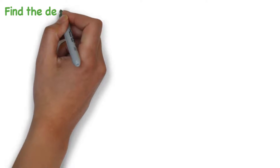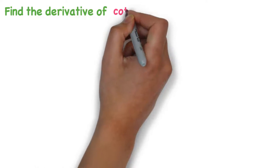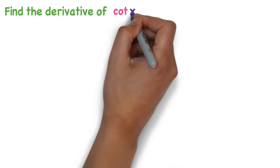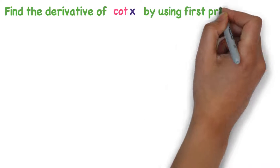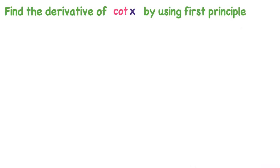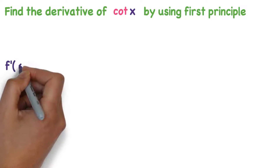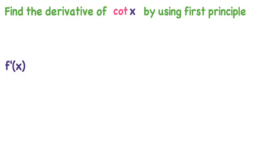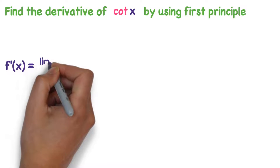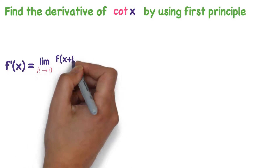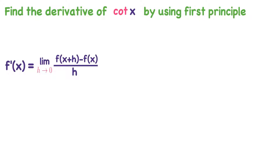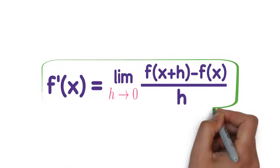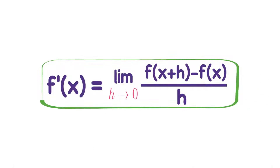Find the derivative of cot x by using first principle. What is first principle of derivative? F dash of x equals to limit h tends to 0, f of x plus h minus f of x, divided by h. This is first principle of derivative.